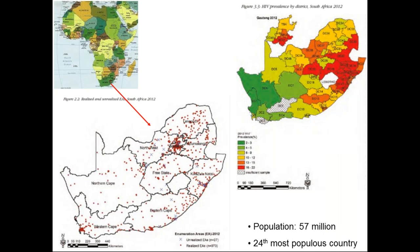South Africa has a population of just over 57 million people, accounting for about 0.75% of the total population of the planet, and it's the 24th most populous country in the world. This map indicates data from 2012, where the red areas indicate the highest prevalence of HIV — 16 to 22% of the population in those areas. Johannesburg is in Gauteng province, the smallest province, but certainly has a problem with HIV too.